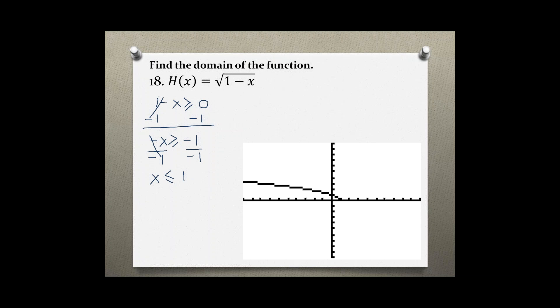Negative 1 divided by 1 is positive 1, so x is less than or equal to 1. When finding the domain, we're looking for all possible x values that could be part of this function, starting at 1 and going to negative infinity.